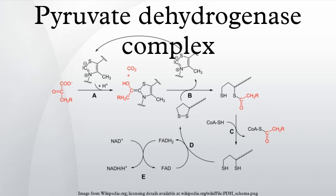Dihydrolipoidal transacetylase: At this point, the lipoate-theoester functionality is translocated into the dihydrolipoidal transacetylase active site, where a transacetylation reaction transfers the acetyl from the swinging arm of lipoil to the thiol of coenzyme A. This produces acetyl-CoA, which is released from the enzyme complex and subsequently enters the citric acid cycle. E2 can also be known as lipoamide reductase transacetylase.